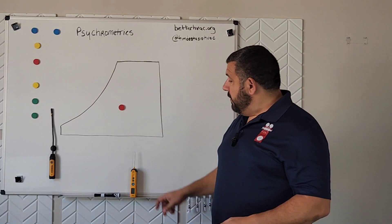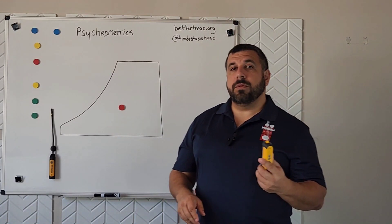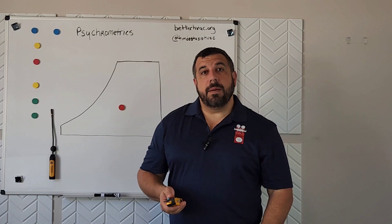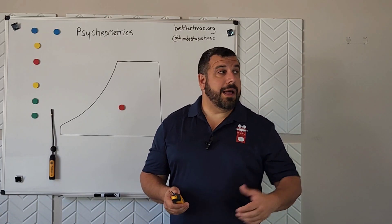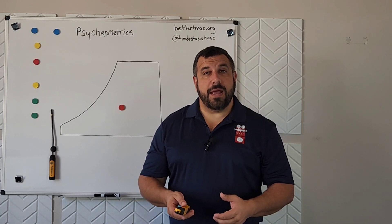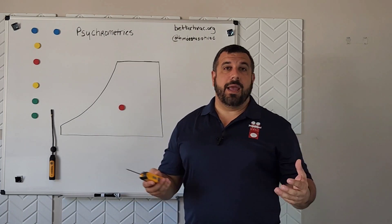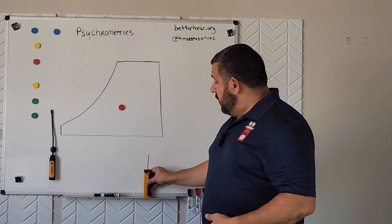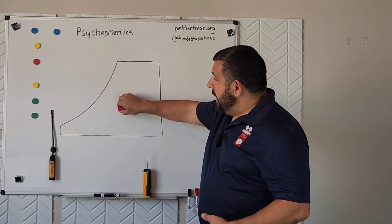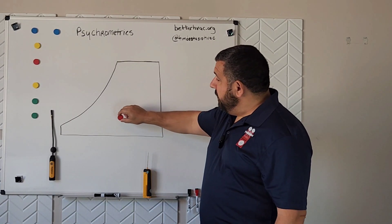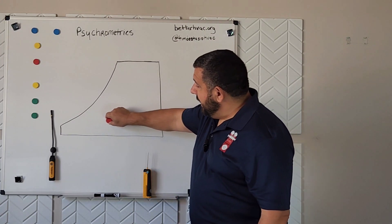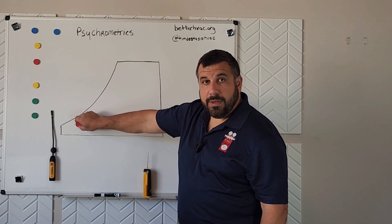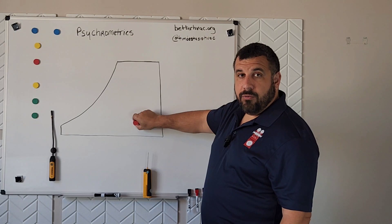When we're talking about the first property of air, which is dry bulb temperature, that's the kind of temperature that we read with a basic thermometer that you carry in your tool bag. We read the temperature rise and drop across a return and our supply. It's the same temperature that we're reading on the thermostat. Dry bulb temperature is just that — it's dry. It doesn't take into account the moisture in the air. In the psychrometric chart, when we are adding or taking away heat or dry bulb temperature from the air, we're moving our dot left and right. Left means we're taking away heat; right means we're adding dry bulb heat.